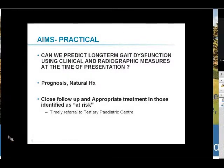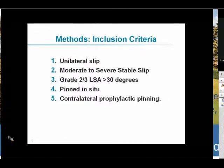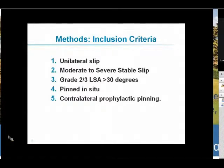This includes timely referral to a tertiary paediatric centre. Our inclusion criteria required patients to have had a unilateral slip that was moderate to severe and stable, characterised by grade 2 or 3 lateral slip angles beyond 30 degrees. The lesion must have been pinned in situ, and patients could have a contralateral prophylactic pinning but no contralateral slip. Excluded were unstable slips, bilateral slips, slip angles less than 30 degrees, and patients who developed avascular necrosis or chondrolysis.